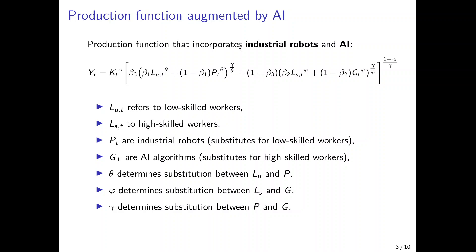The central point in the paper is the production function we assume to model Artificial Intelligence together with industrial robots. That's a specific functional form — a nested CES production function — that allows for substitution of low-skilled workers by robots and substitution of high-skilled workers by artificial intelligence. Aggregate output, denoted Yt on the left-hand side, is produced with physical capital with output elasticity alpha — traditional physical capital in the sense of machines, production halls, and assembly lines — and with a term in square brackets resembling the properties of labor, with output elasticity 1 minus alpha.